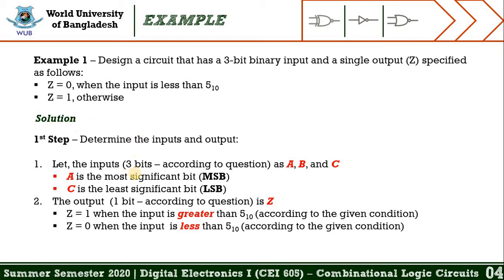The first step is to declare the inputs as well as output. We already know the symbol of output from the question, which is Z, but we need to define the inputs. Let the inputs be 3 bits — capital letters A, B, and C. A is the most significant bit (MSB) and C is the least significant bit of the 3-bit binary number. The output is a single bit, symbolized by capital letter Z.